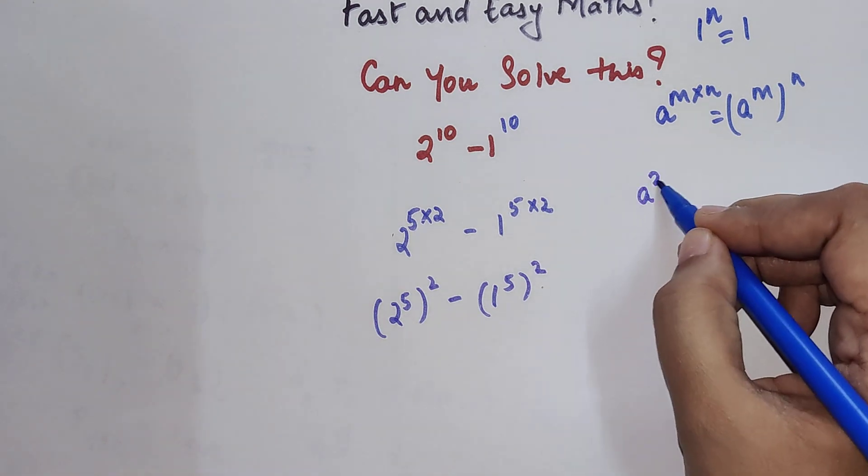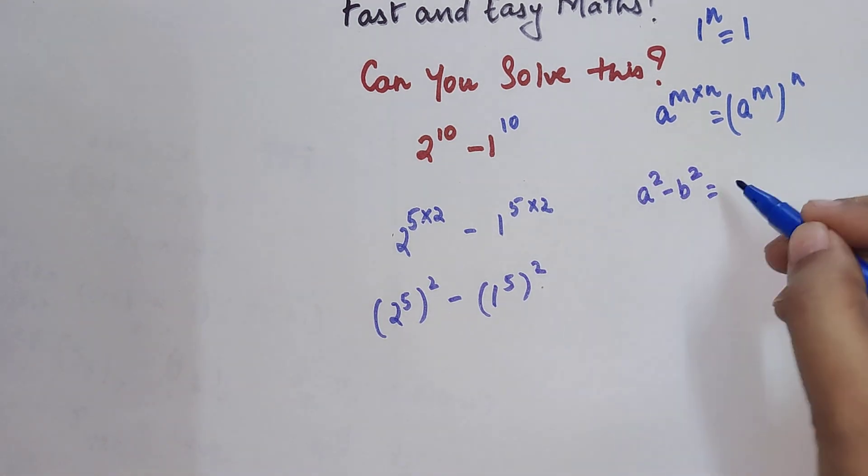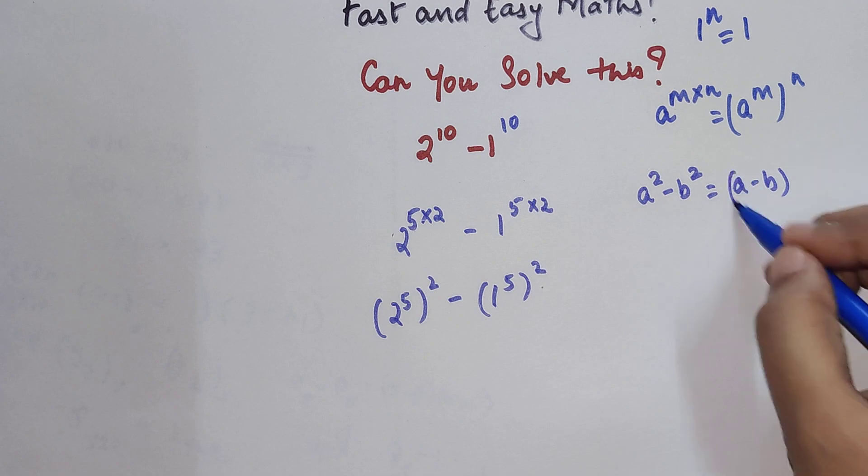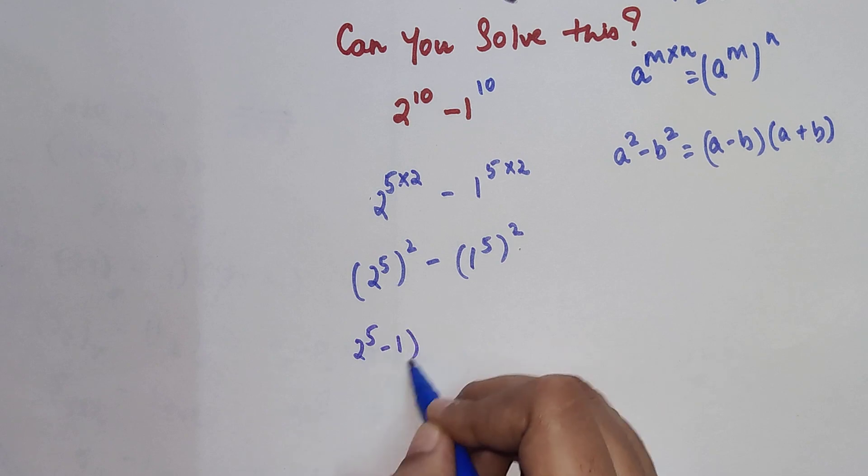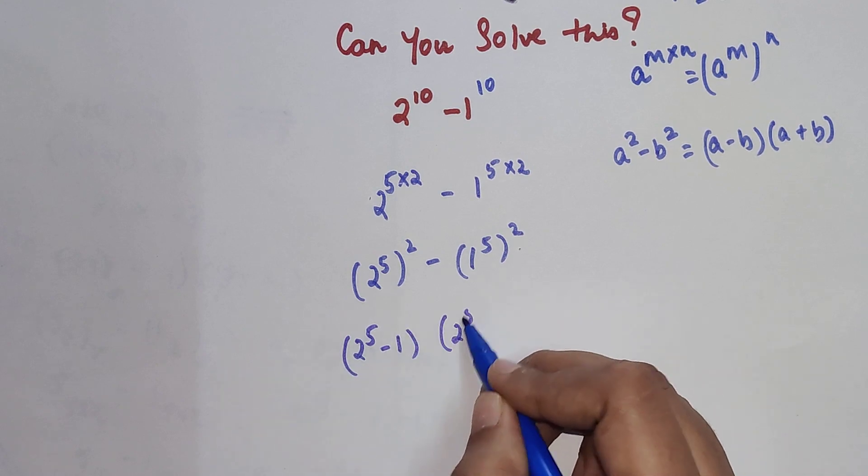Now we know that a square minus b square is nothing but a minus b times a plus b. So here I can write this as 2 raised to 5 minus 1 and 2 raised to 5 plus 1.